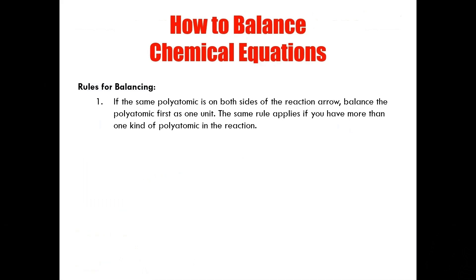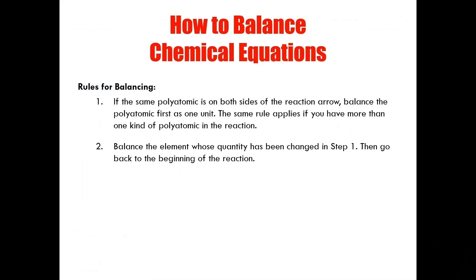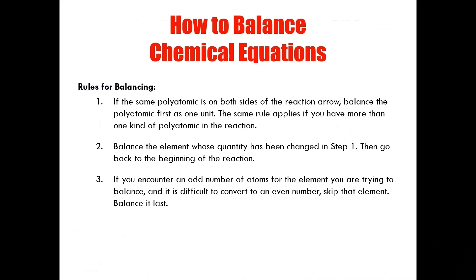The same rule applies if you have more than one kind of polyatomic in the reaction. Rule number two: balance the element whose quantity has been changed in step one, then go back to the beginning of the reaction. Rule number three: if you encounter an odd number of atoms for the element you are trying to balance, and it is difficult to convert to an even number, skip that element and balance it last.